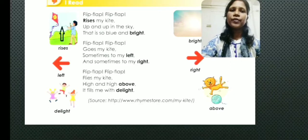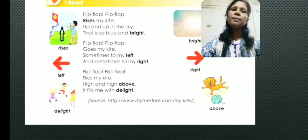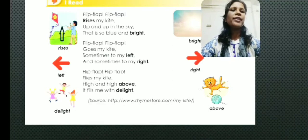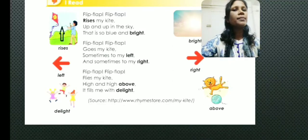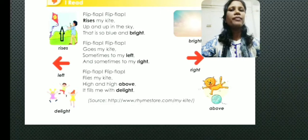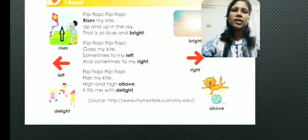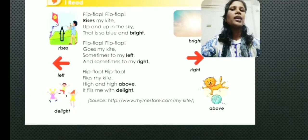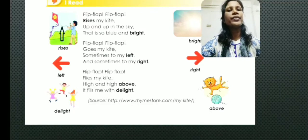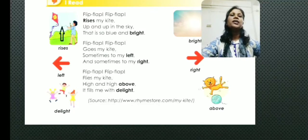Flip flap, flip flap, rises my kite, up and up in the sky that is so blue and bright. Flip flap, flip flap, goes my kite, sometimes to my left and sometimes to my right. Flip flap, flip flap, flies my kite, high and high above, it fills me with delight. This is all about this poem.